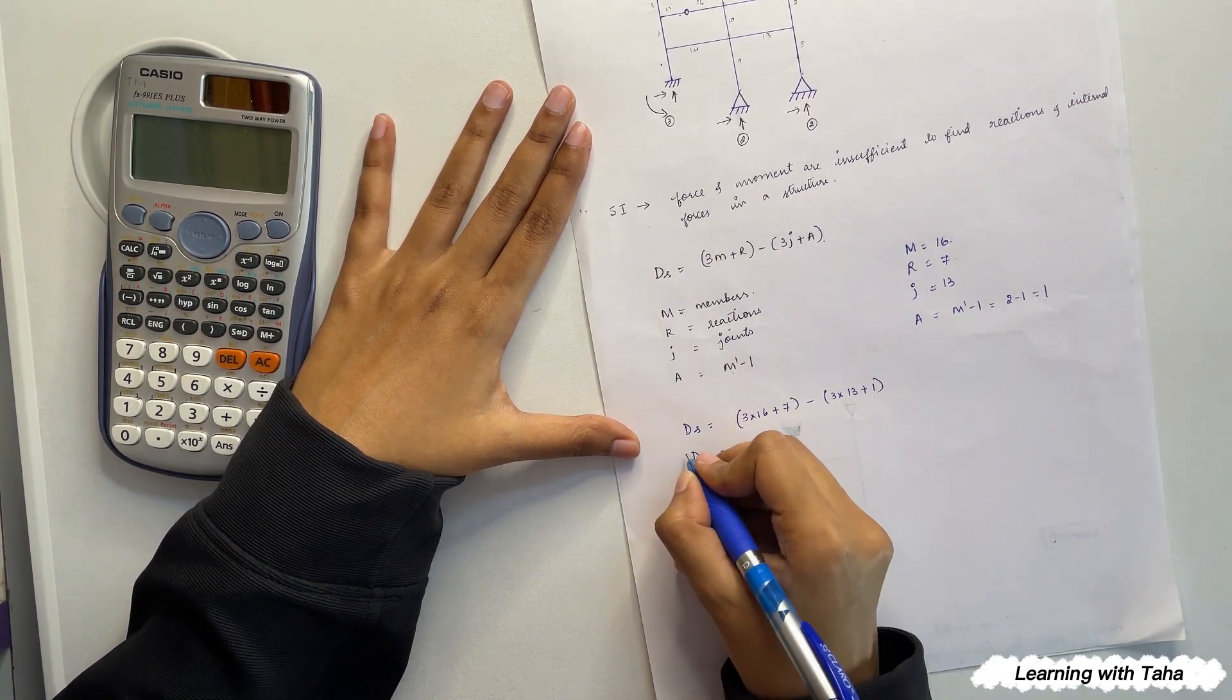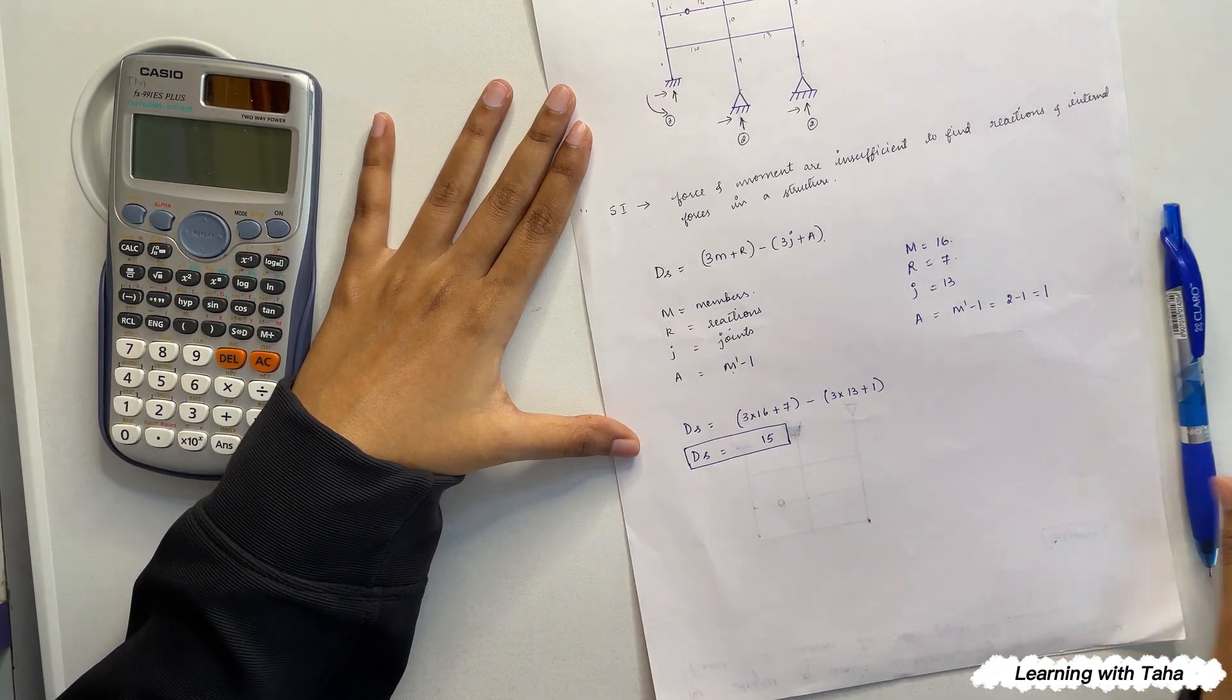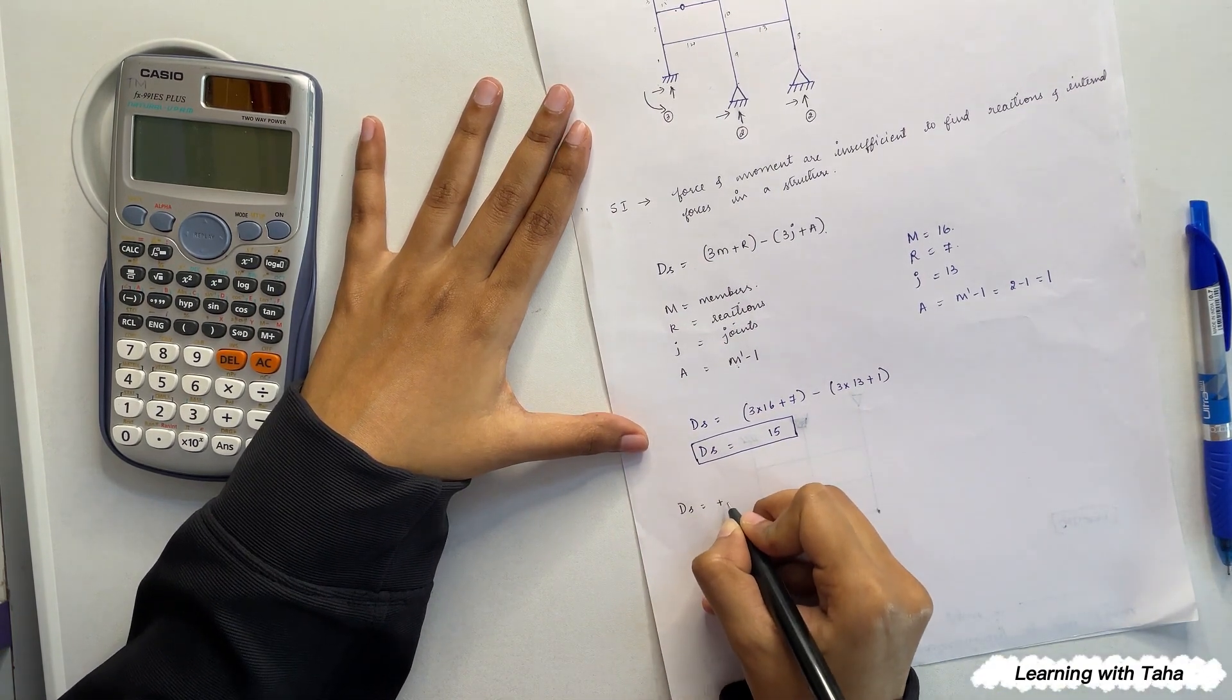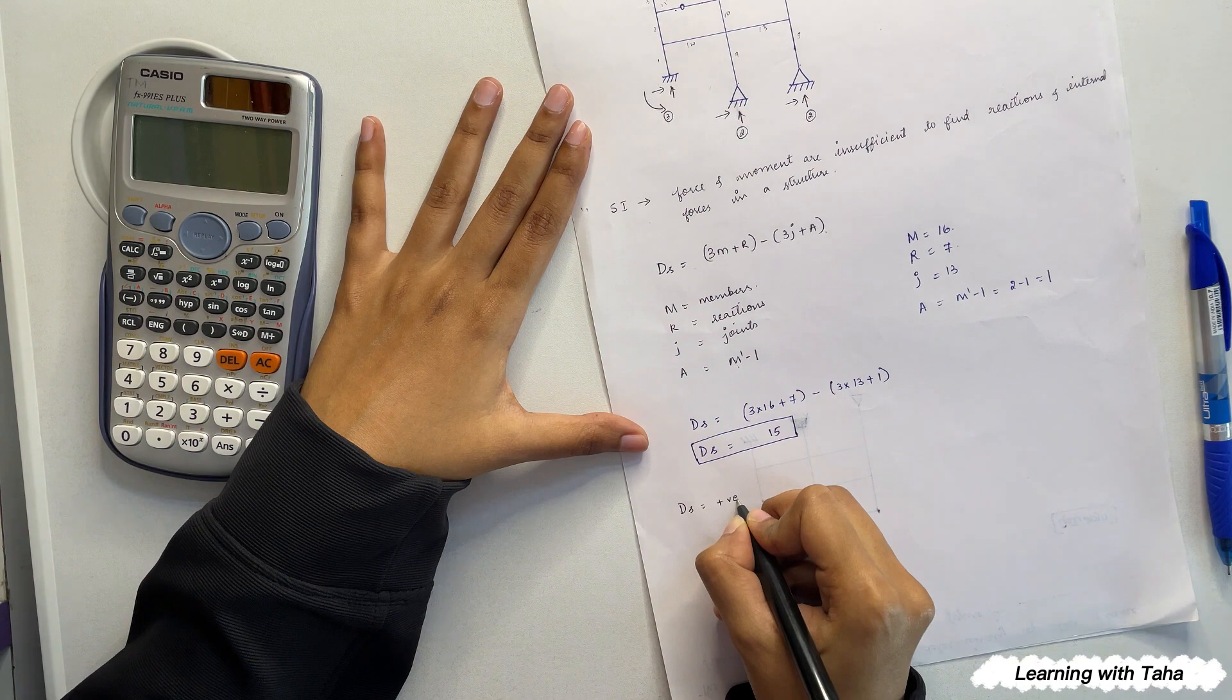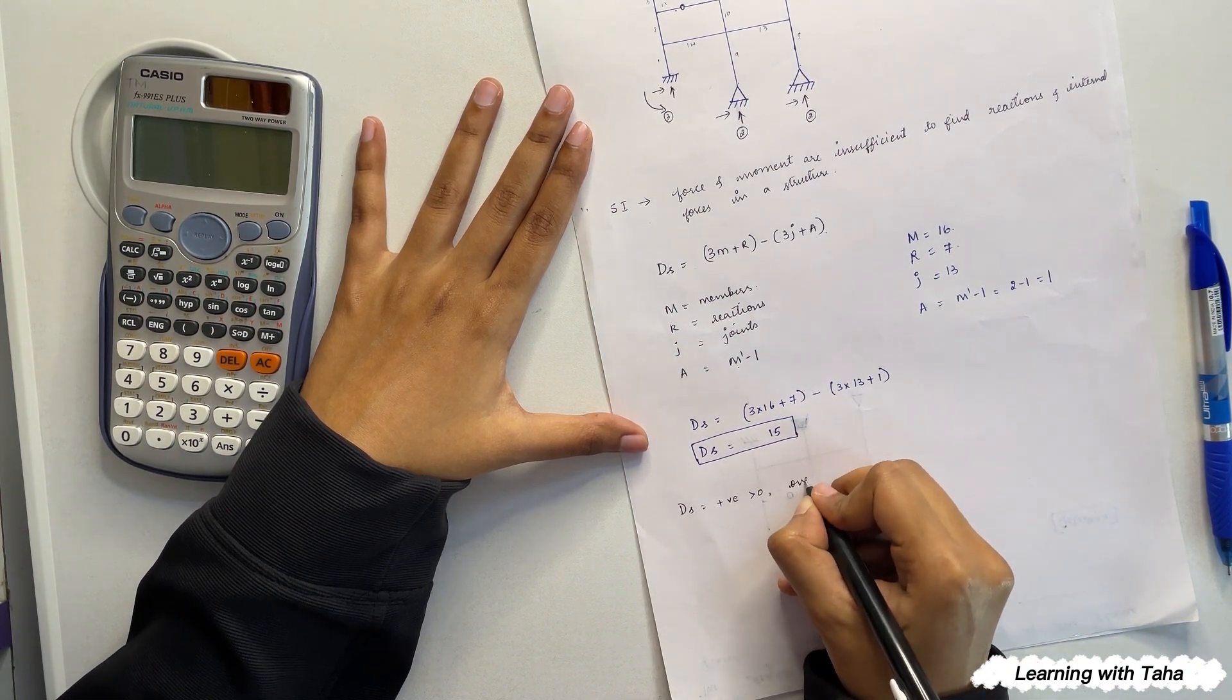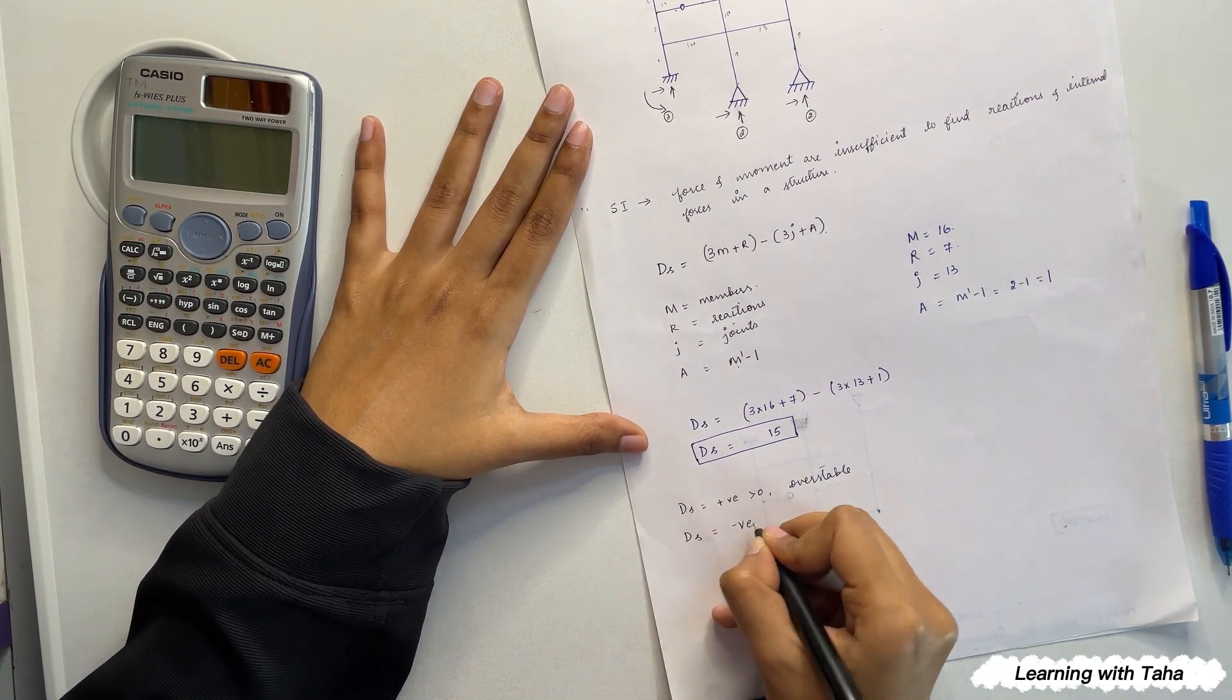Fifteen. And one more thing is, if degree of static indeterminacy is positive, which is nothing but greater than zero, then the structure is overstable.